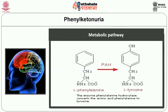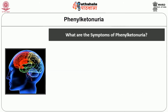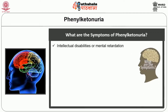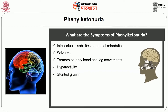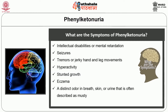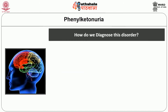This diagram shows the metabolic pathway of how phenylalanine is converted into tyrosine. The symptoms of Phenylketonuria include intellectual disabilities or mental retardation, seizures, tremors or jerky hand and leg movements, hyperactivity, stunted growth, eczema, a distinct odor in breath, skin or urine often described as musty, and lighter skin, hair and eye color than their family members.